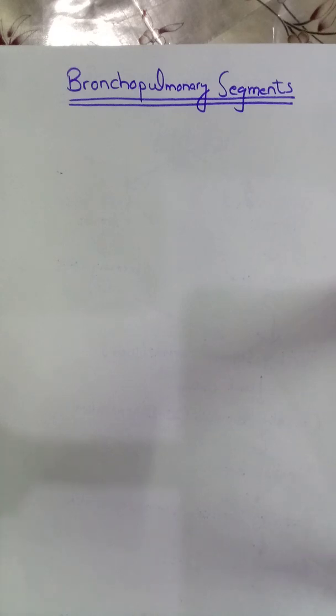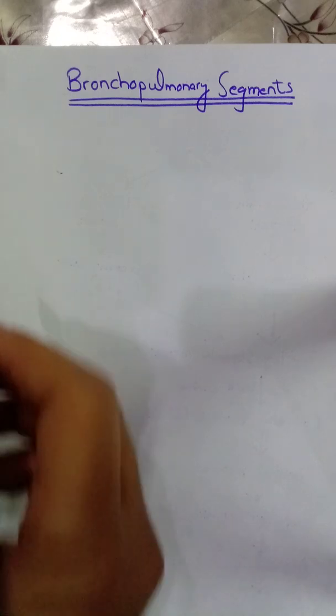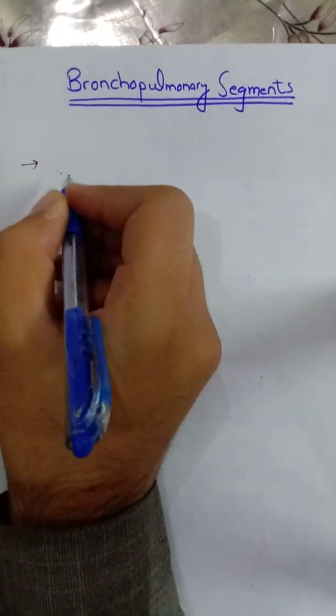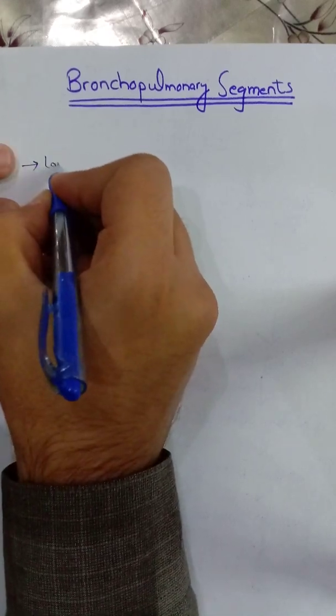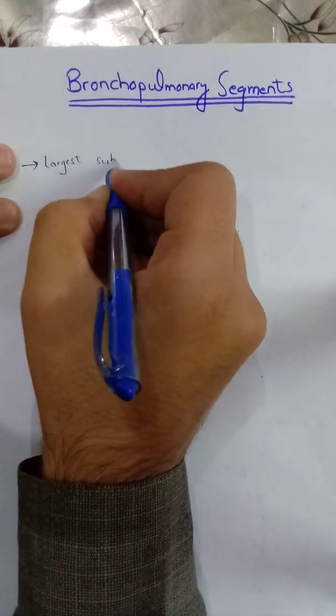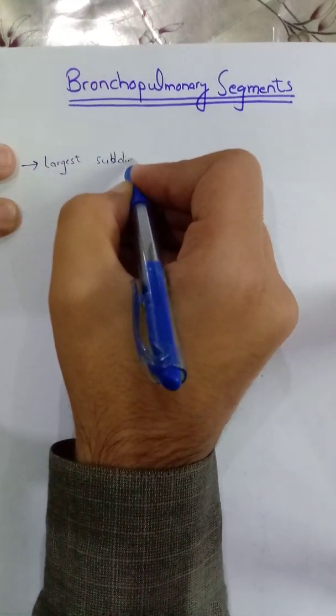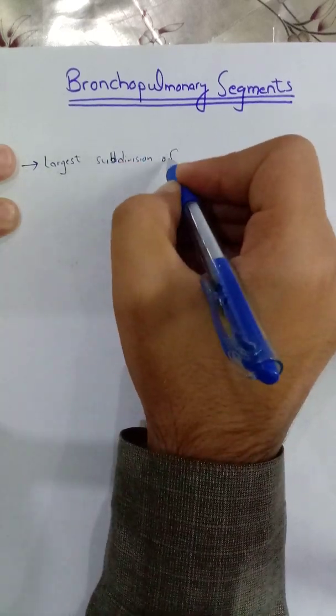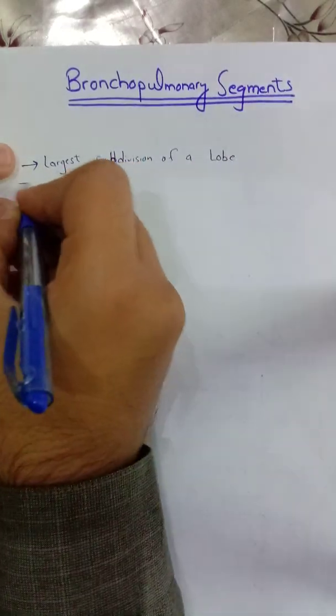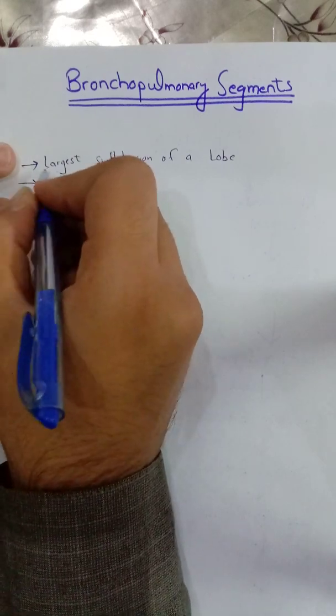Assalamu alaikum, now we will discuss the bronchopulmonary segments, which are also a part of the tracheobronchial tree. First of all, we will see a brief introduction. These are the largest subdivision of a lobe and they are pyramidal in shape.